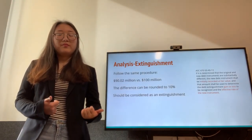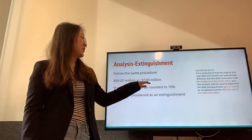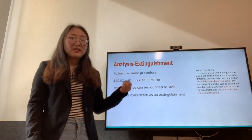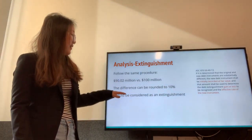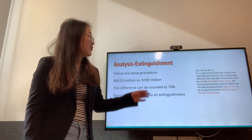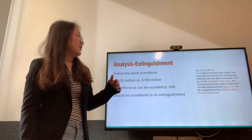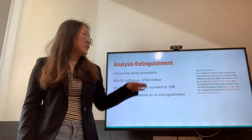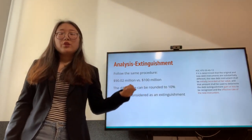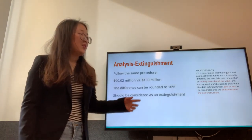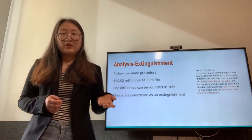Under Alternative Two — extinguishment — following the same procedure, the difference between $98.02 million and $100 million can be rounded to 10%, so it is acceptable to treat this as an extinguishment. ASC 470-50-40-13 provides the accounting treatment: we initially record the new debt instrument at fair value, which is $93 million in our case, recognize the related gains and losses, and determine the new effective interest rate.